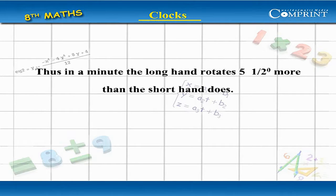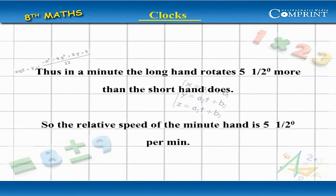Thus in a minute, the long hand rotates 5 1/2 degrees more than the short hand does. So the relative speed of the minute hand is 5 1/2 degrees per minute.